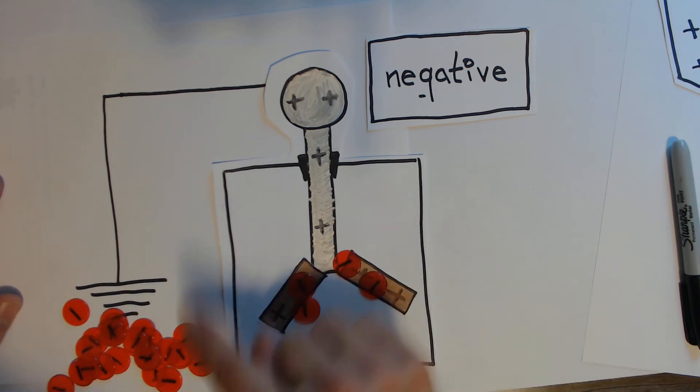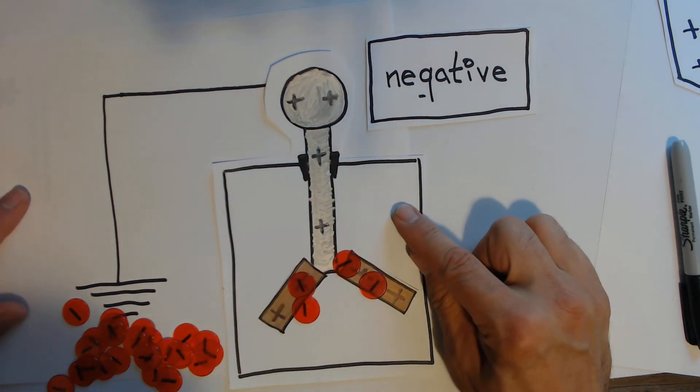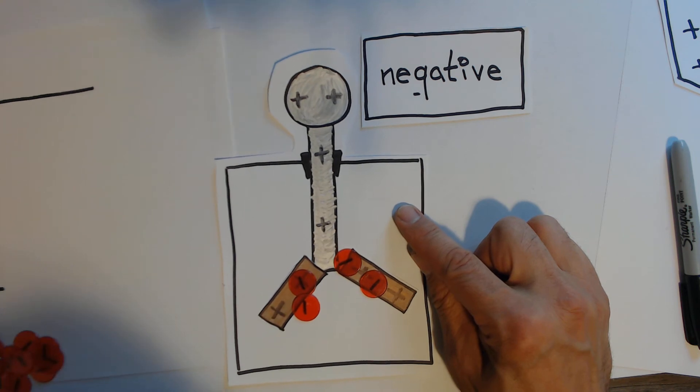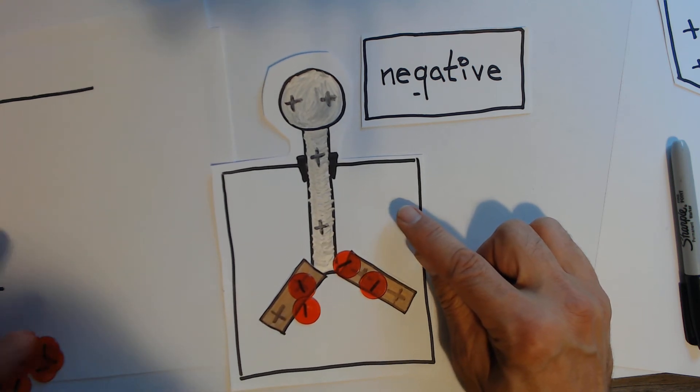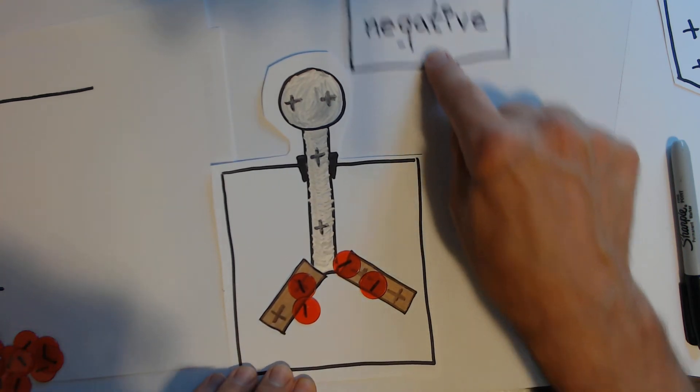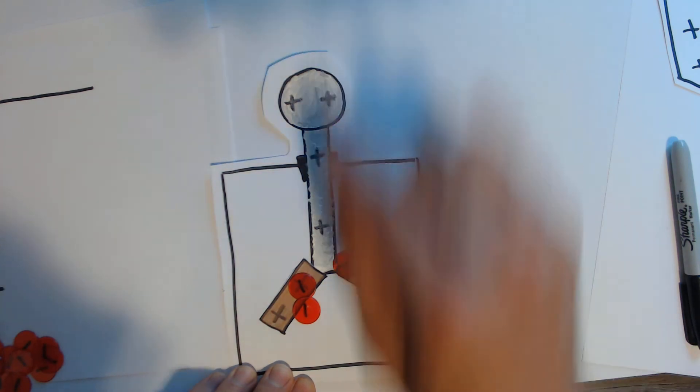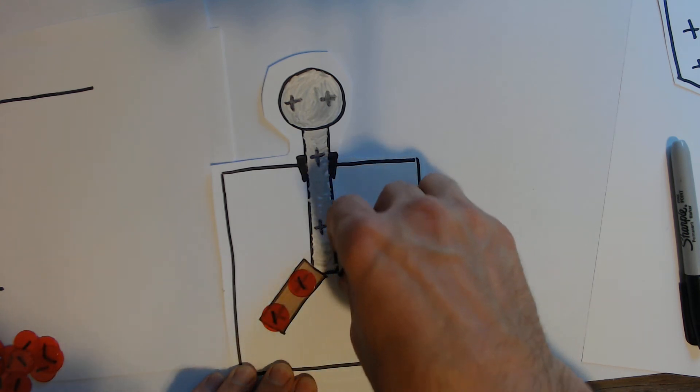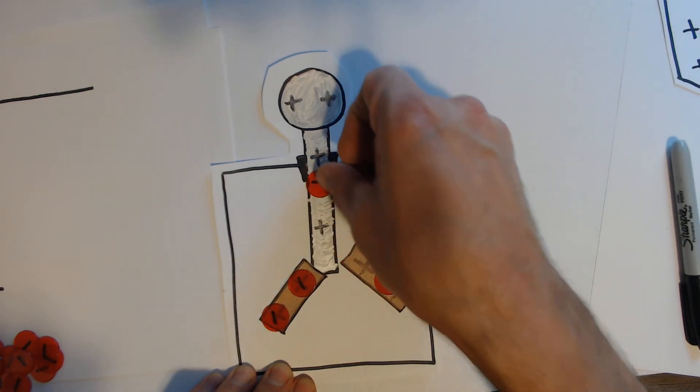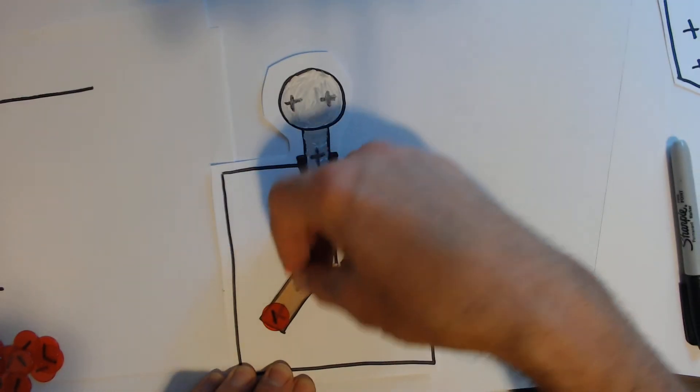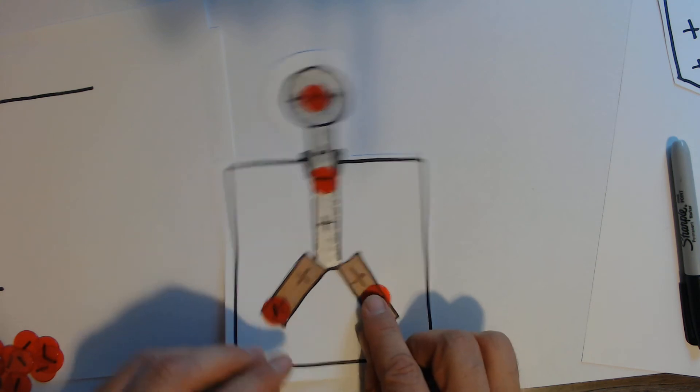So they're now repelled. I then disconnect the electroscope from the ground. Then I take away the negatively charged object, and what happens is it stays repelled because now this is positive. These will kind of try to balance out still, but as you can see...